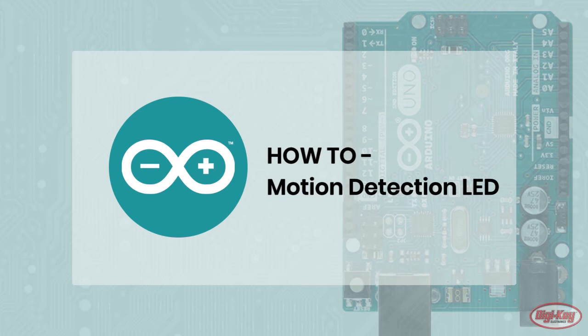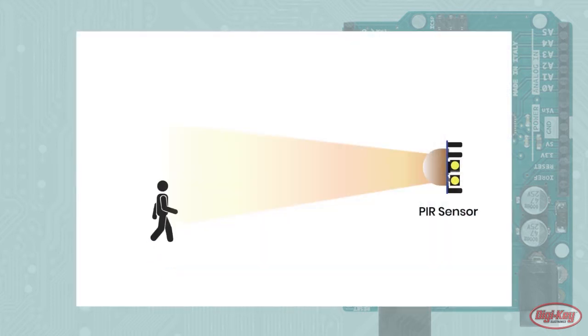Motion detection using PIR modules is very easy, thanks to simple digital output and the ease of Arduino programming. In this video, we'll learn how to make an LED light up when a user walks past an Arduino.